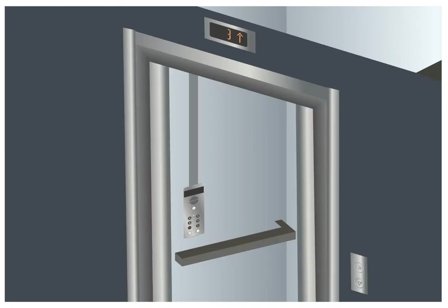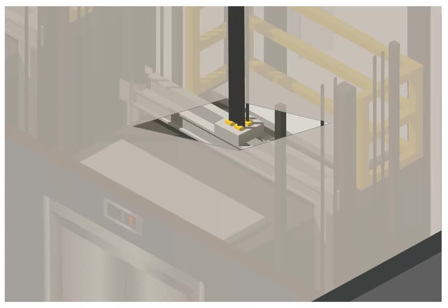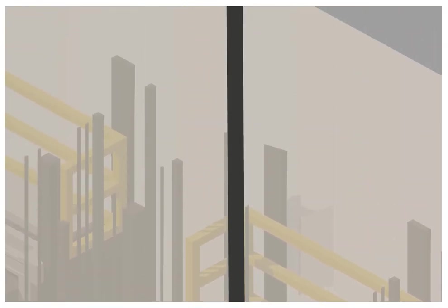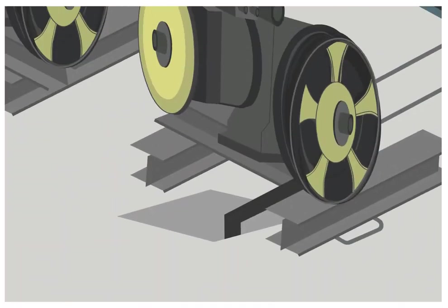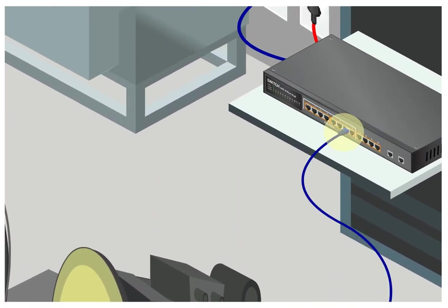Step 2: Take the CAT 5E run up the travel cable and connect to the PoE Plus connection on the network switch, either installed in the machine, electrical, or network room on that floor.